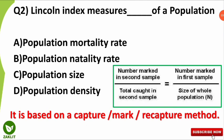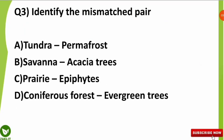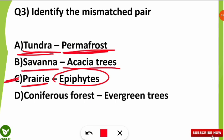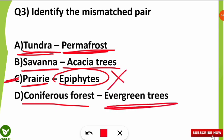The third question was: identify the mismatched pair. The correct answer — the mismatched pair — is the prairies. Prairies are grasslands, and in grasslands you will never see trees, because epiphytes mostly grow on trees. The other options are correctly matched: tundra biome is known for permafrost, savannah has acacia trees, and coniferous forests have mostly evergreen trees. Option C is the mismatched pair.